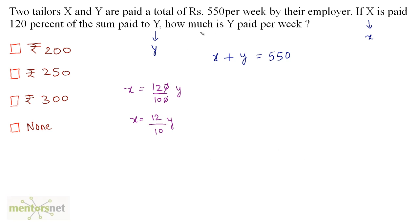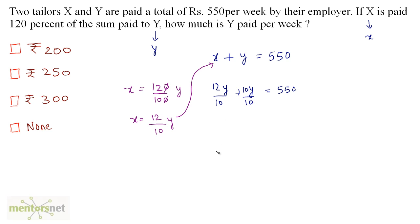Now we have to calculate how much y is paid per week. We can put this value of x into the first equation and get the value of y. So we have 12y by 10 plus y is equal to 550. Writing y as 10y by 10, and with a common denominator of 10, we have 12y plus 10y, which equals 22y, equal to 550.